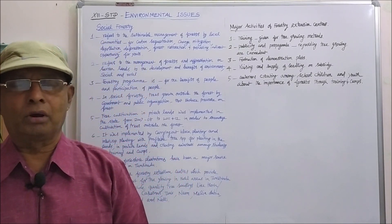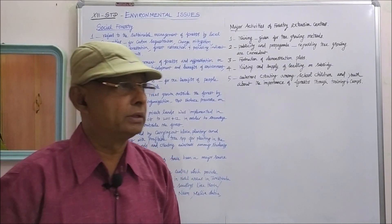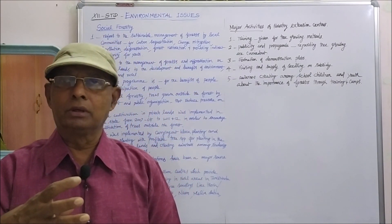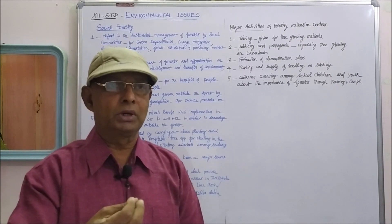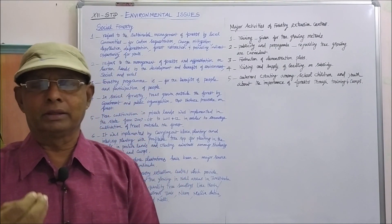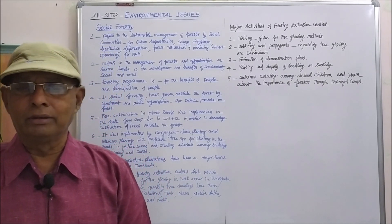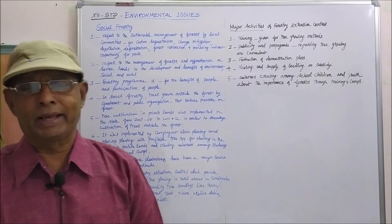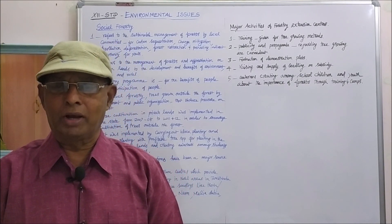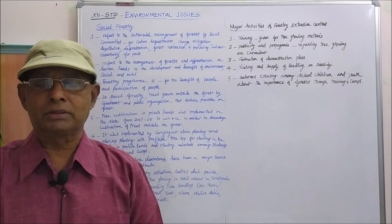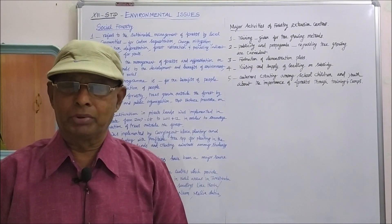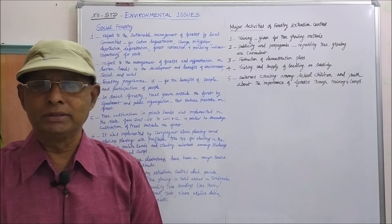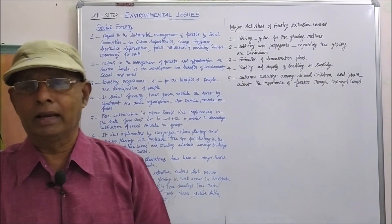Inter-crop planting involves cultivating shrubs and herbs in between the main crops — that is mixed cropping, inter-cropping, or inter-planting. This is done with profitable tree species for planting in private lands, creating awareness among students by giving training and tasks.